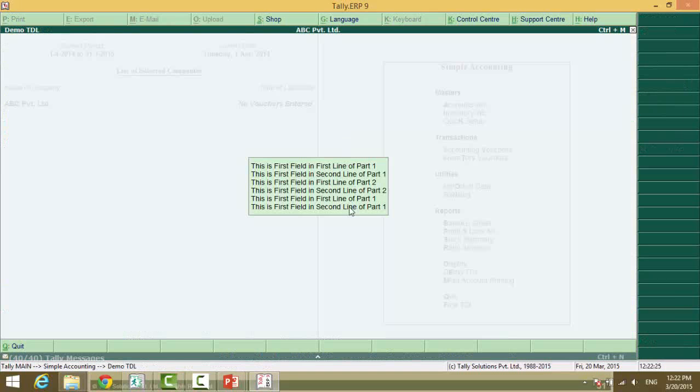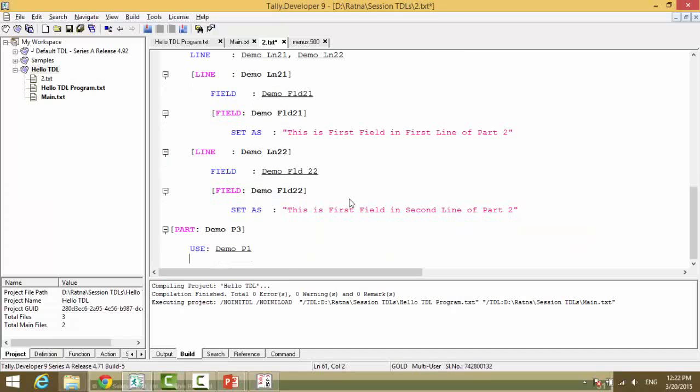Do you see this additional two lines? Now what we will do is local. Now what does the part contain? Line. Which line? So in part one we have line one, so demo ln one.